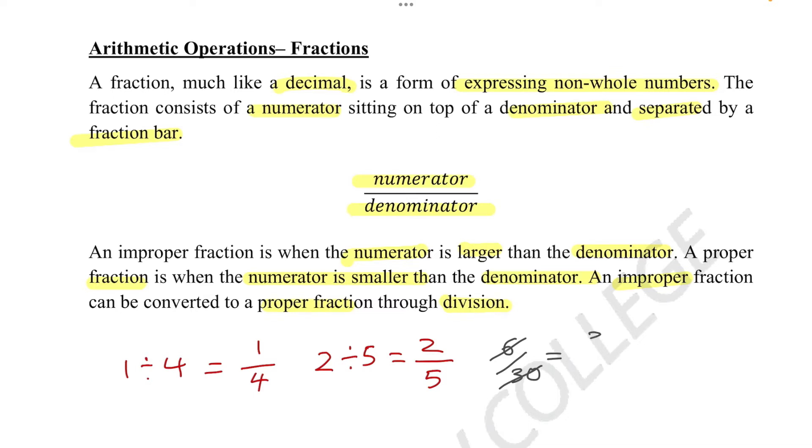So 6 will become 3 because 6 divided by 2 is 3, and 30 will become 30 divided by 2, which is 15. Once again, we can simplify this by dividing by 3 on both sides, which then equals 1 as the numerator and 5 as the denominator. And then that becomes our simplified fraction.